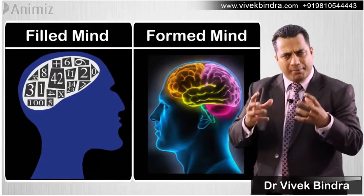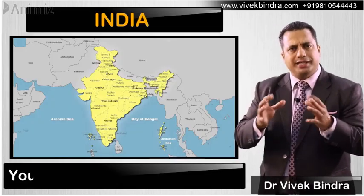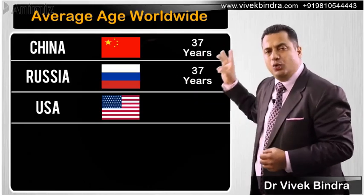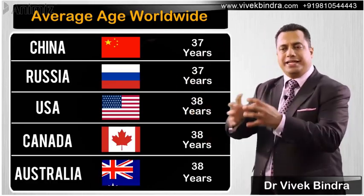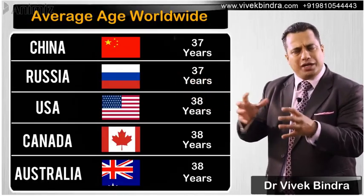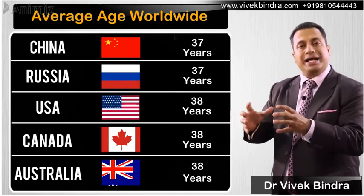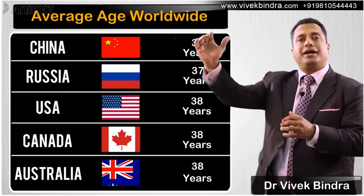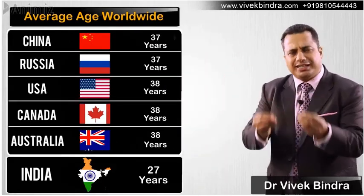Among countries worldwide, our India is one of the youngest countries in the world. China's average age is 37, Russia 37, US 38, Canada 38, Australia — all these countries have a higher median age. Our country is young; our country's average age is 27.